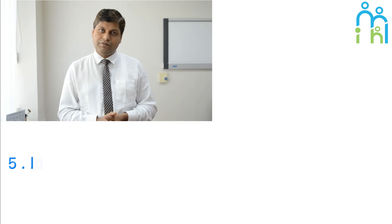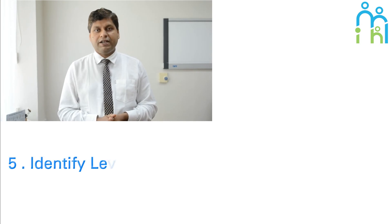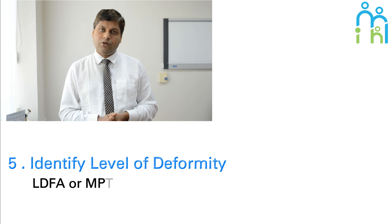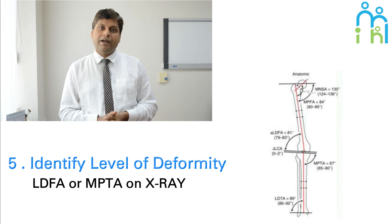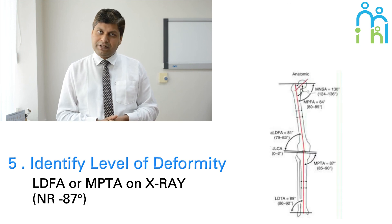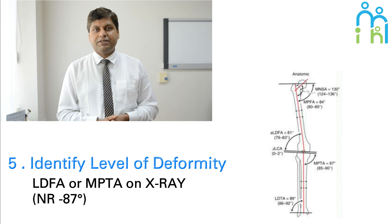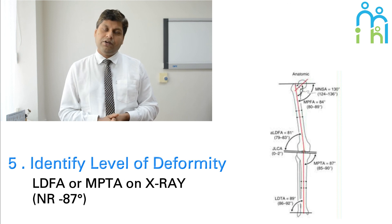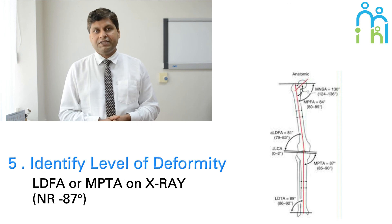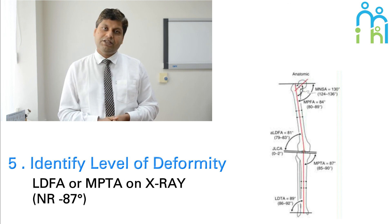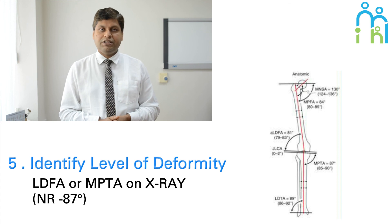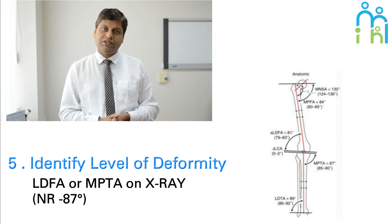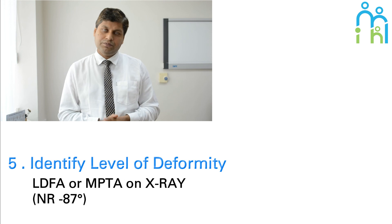The last point is to determine whether the deformity is in the tibia or the femur. For that, we check the lateral distal femoral angle and the medial proximal tibial angle. Normally it is 87 degrees. If there is any change — more than or less than 87 degrees — then either the deformity is in the femoral or in the tibial, which helps in planning surgical correction. Thank you.